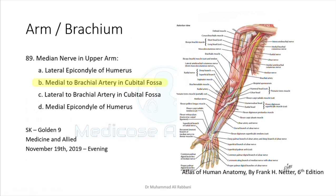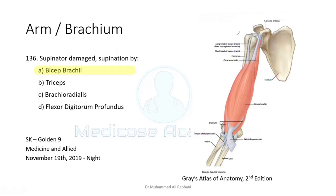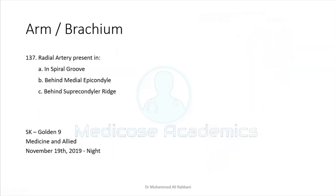If the supinator muscle is damaged, the muscle that takes up supination is the biceps brachii. In the pronated form, when supination occurs, the radial tuberosity moves down and the biceps tendon helps pull back into the supinated position.